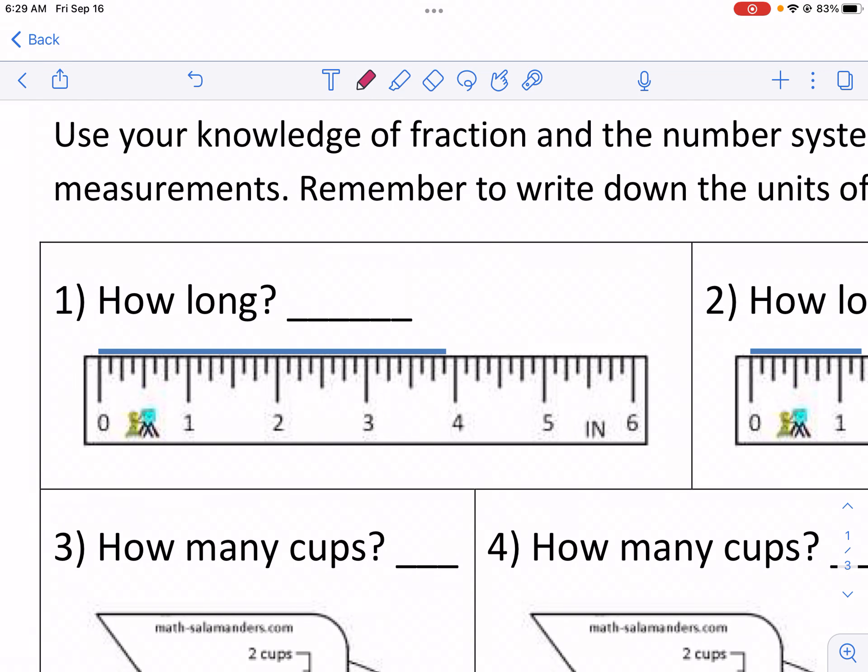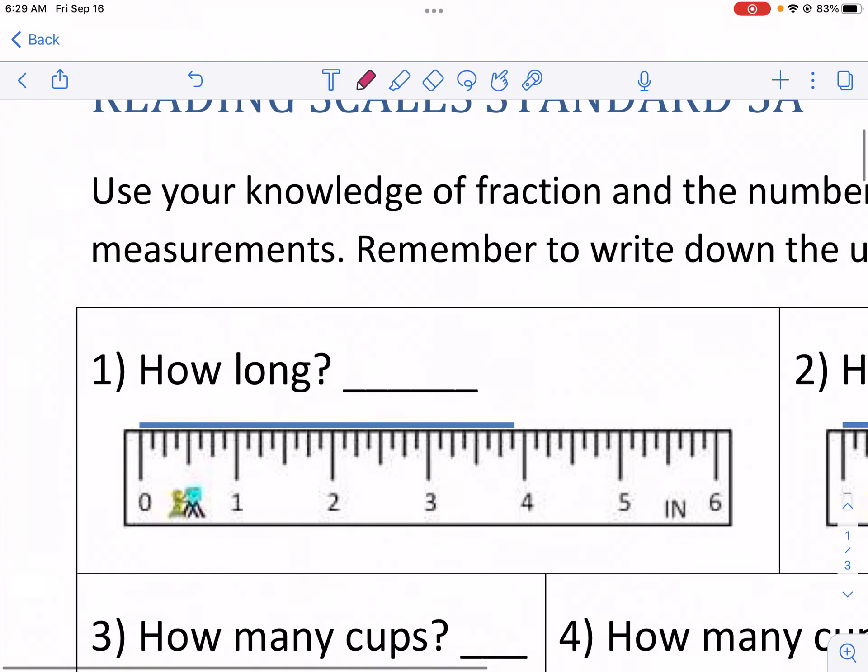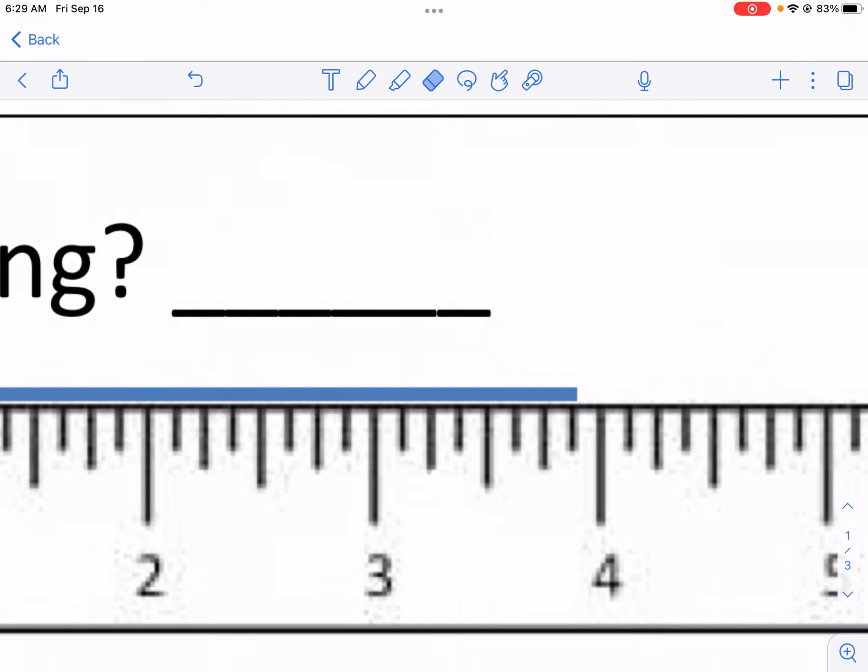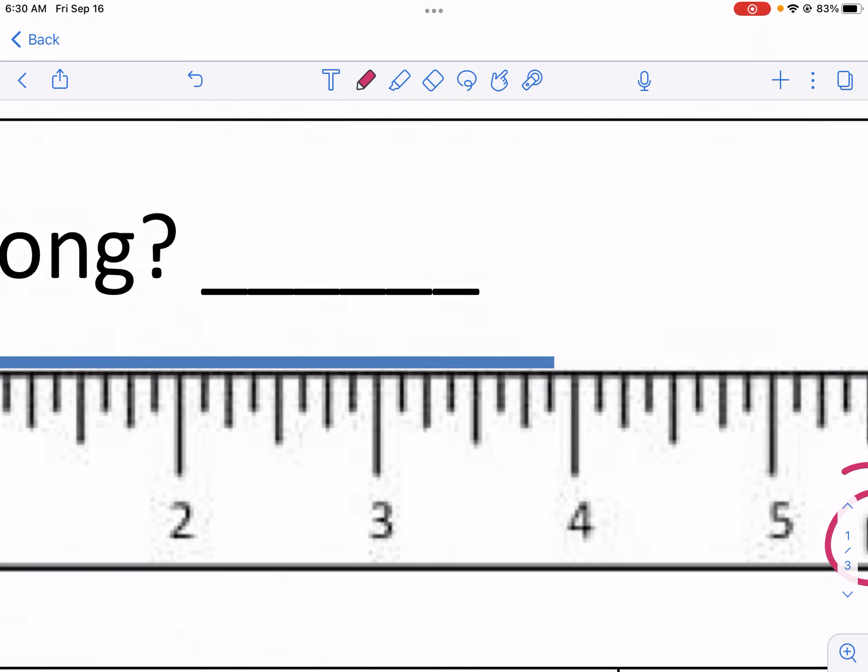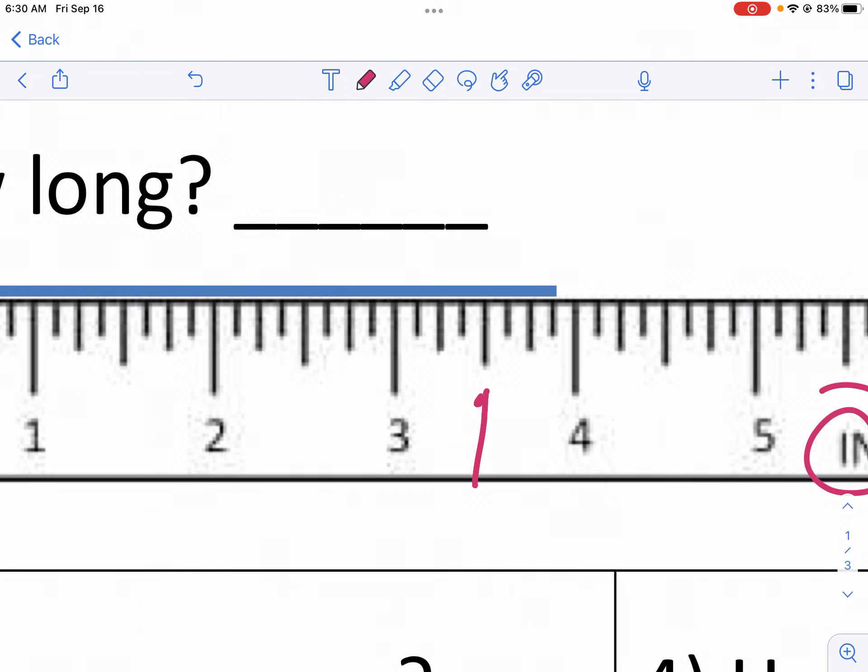Number one, we're looking at a ruler here. These are just standard measurements here, not metric, and it asks how long. So we're given here that this is in inches and one of the things you need to know is the inches are listed here at the bottom. So we have one, two, three, four, five, six. Now the confusing part for most students is what happens when we get into these little lines. So we need to understand a couple of things. One, this right here, that's the longest line in between the three and the four. So that means that is three and a half.